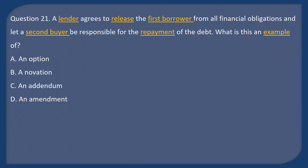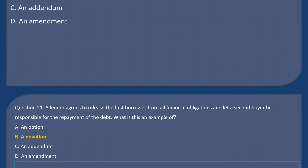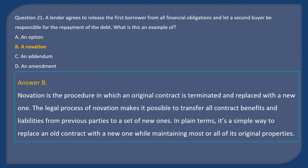Question 21: A lender agrees to release the first borrower from all financial obligations and let the second buyer be responsible for repayment of the debt. What is this an example of? A. An option. B. A novation. C. An addendum. D. An amendment. Answer: B. Novation is the procedure in which an original contract is terminated and replaced with a new one. The legal process of novation makes it possible to transfer all contract benefits and liabilities from previous parties to a new set, essentially replacing an old contract with a new one while maintaining most of its original properties.